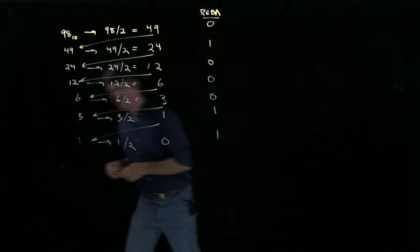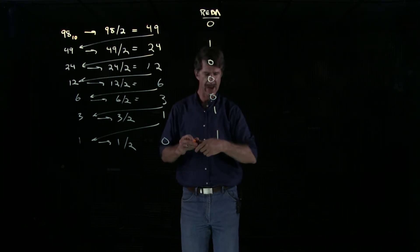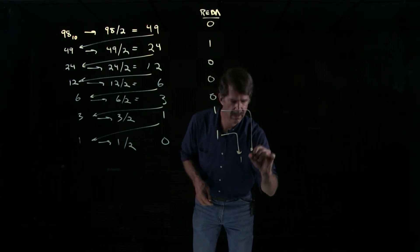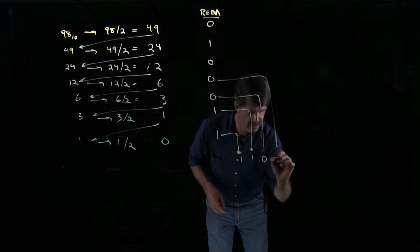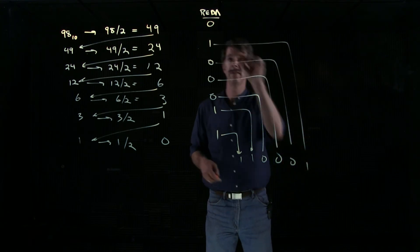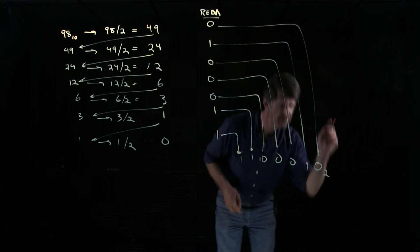And what this tells us, remember we get the most significant digit at the bottom, least at the top, so we read backwards. Our number is 1, 1, 0, 0, 0, 1, 0 base 2.